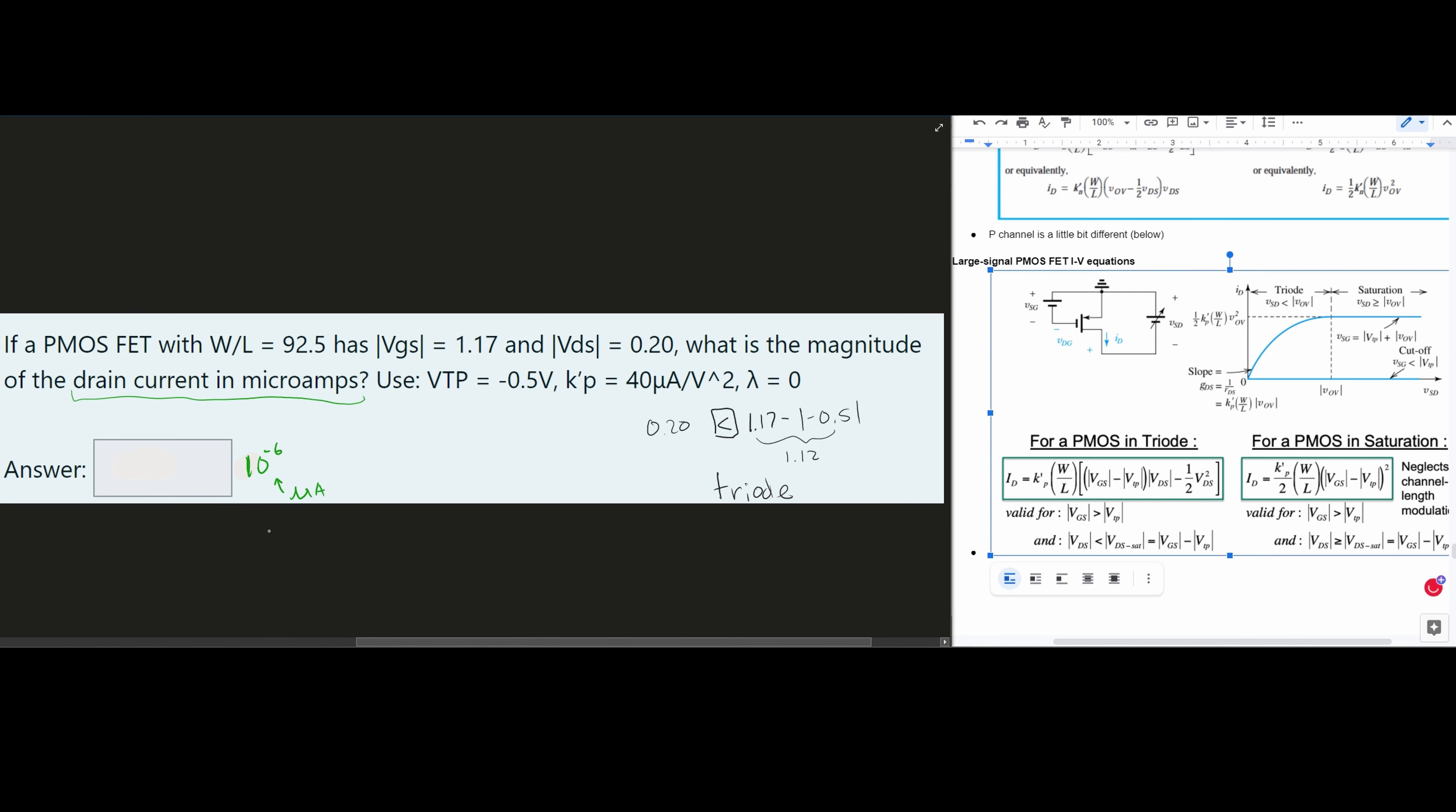So let's use our triode equation. When we're plugging in our values, we just got to be careful. Our ID is equal to K prime of P. In this instance, we are going to have 40 times 10 to the negative 6 for our microamps. And in fact, we could just omit the 10 to the negative 6 because we are going to want that as our units anyways. So we could just have a 40 right here. And then we're going to have our W over L. This is just given to us as 92.5.